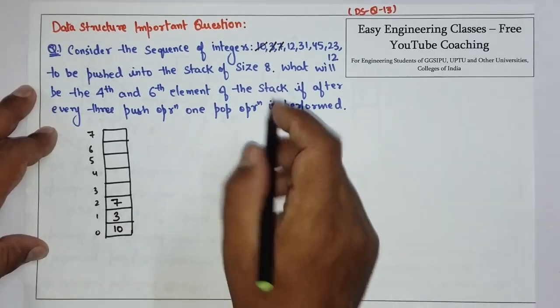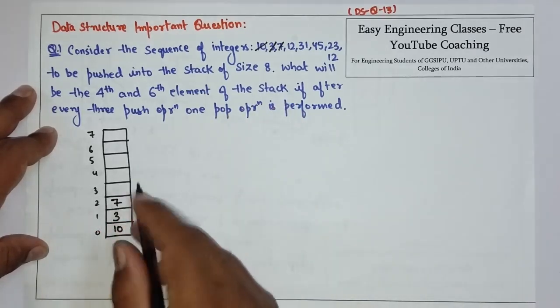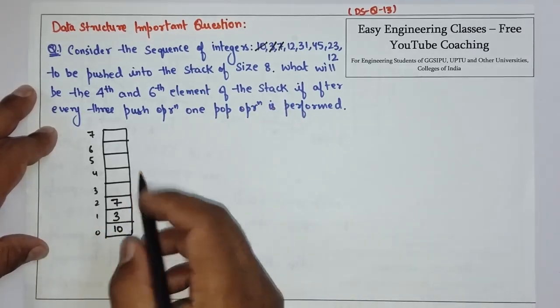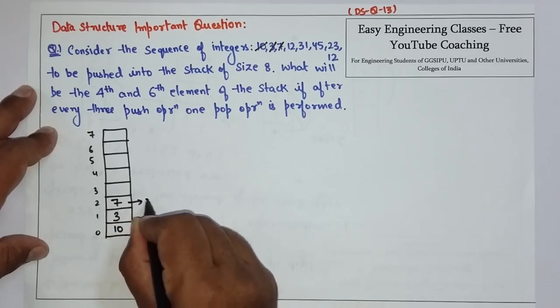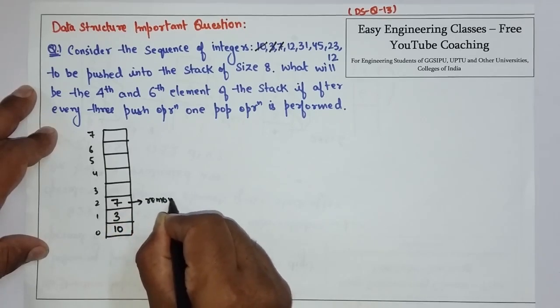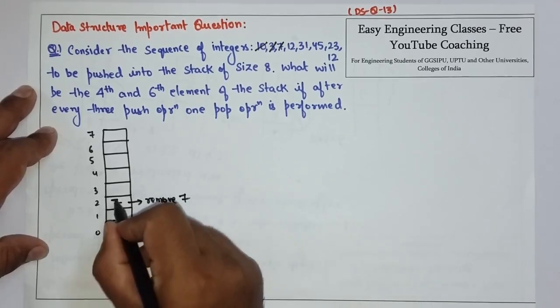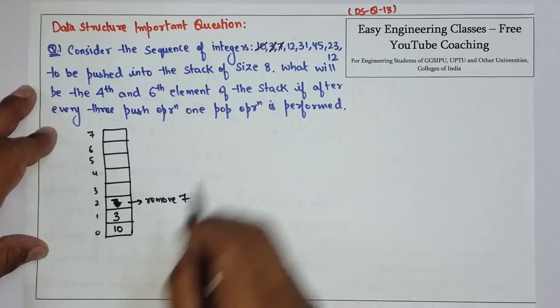So, we have to do 1 pop operation. That means, the top element to remove. That means, we have to remove this 7. So, we are now removing 7.